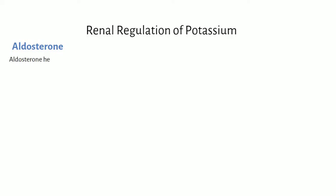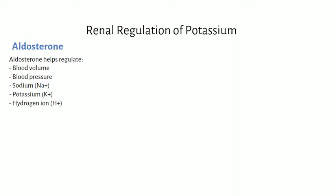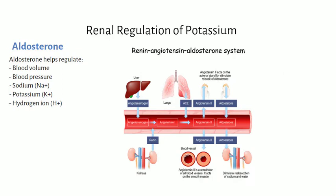Aldosterone helps to regulate blood volume, blood pressure, sodium, potassium, and hydrogen ion. Let's walk through the renin-angiotensin-aldosterone system and through the functions of aldosterone.